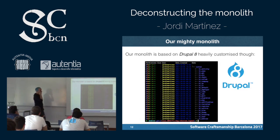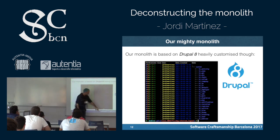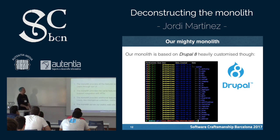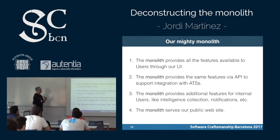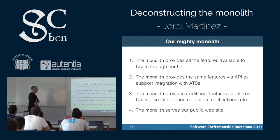Our monolith was based on Drupal 7, and we had a migration to Drupal 8 to facilitate better developer onboarding, but it's very customized. This is the list of our components — there are 25 different components made from scratch by the team. Our monolith provides all the features available via API, any additional features for internal users like intelligence collection, notifications, reports, and also serves our public website.